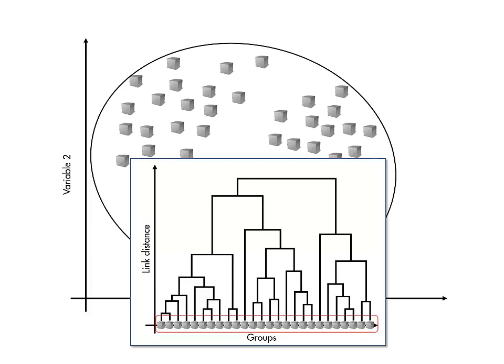Having created the dendrogram structure, you can visually see potential groupings by looking for relatively large distances between all the groups, and using that level of the nested structure as a cutoff.